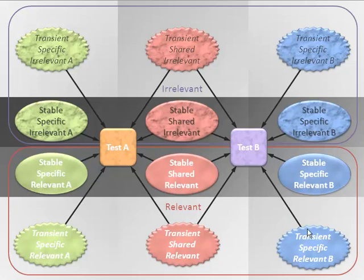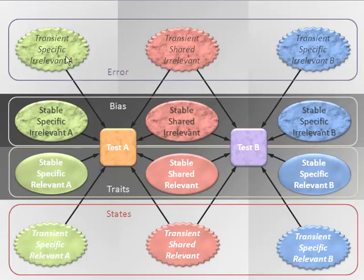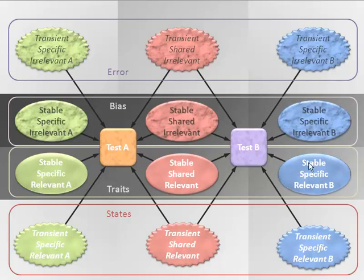Taking the influences row by row: the first row is measurement error — some is shared, some is not. There are stable traits and other influences; some we could call bias, some not, but these are all things that are stable but not relevant, and some are shared, some are not. Then we have traits that are relevant to the construct being measured — these are stable influences, some shared, some not. And finally, some abilities fluctuate quite a bit, so performance reflects the state the person is in rather than the long-term trait or ability the person possesses.